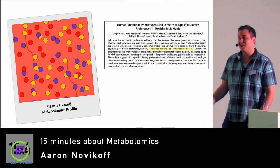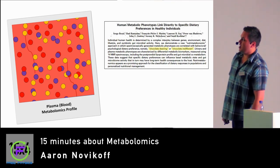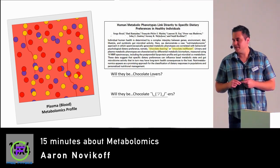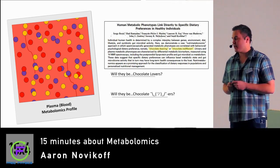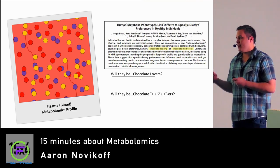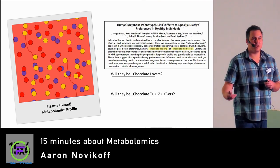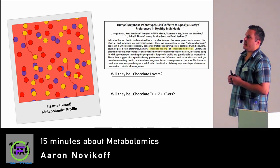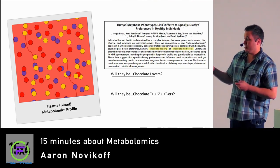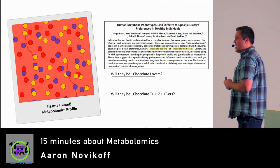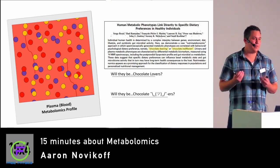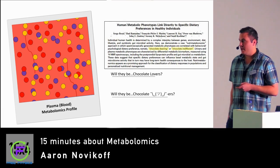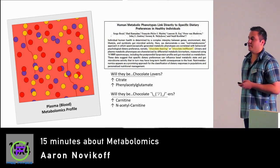A more interesting actual study was done by Dr. Serge Rezi. He wanted to find out if we can predict whether someone likes chocolate without them even eating it yet. He took plasma profiles of subjects, ran analytic techniques, and looked for outstanding biomarkers between the two groups. He found that in chocolate lovers there are elevated citrate and phenylacetylglutamate, while in people indifferent to chocolate there are higher levels of carnitine and N-acetylcarnitine. These are biomarkers of chocolate lovers or people of chocolate indifference.